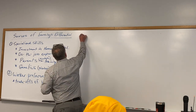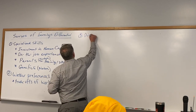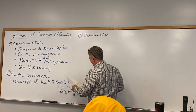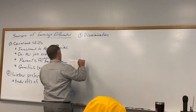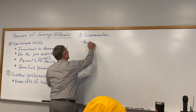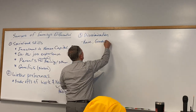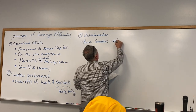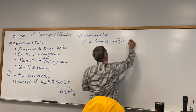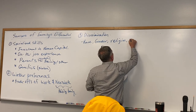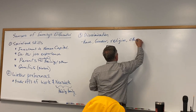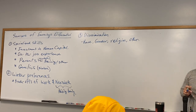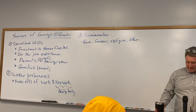Number three: discrimination — race, gender, religion, or other. There are all kinds of different ways humans have found to discriminate against each other.